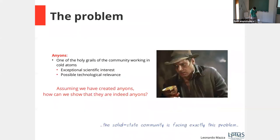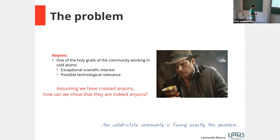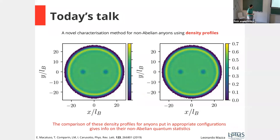Anyons are one of the holy grails in the community. A lot of people would pay a million euros to be able to show that they can create an anyon and ensure it is there. Today I'm not touching the problem of creating anyons. I will assume we have an experimental platform that creates anyons. The question I want to address is: once I have them, how can I show that they are anyons and not something else? This is not just an academic problem — in the solid-state community, quantum Hall states are routinely realized but demonstrating non-Abelian statistics is much harder. Even Majorana fermions remain debated after ten years.